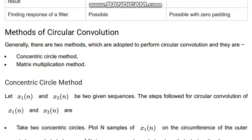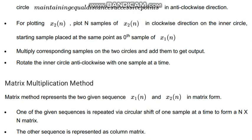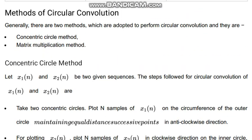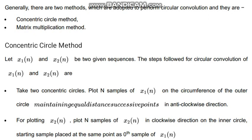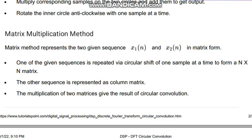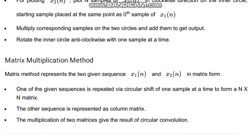So that is methods of circular convolution. First of all, that is concentric circular method, and second is matrix multiplication method. The two given sequences are x1(n) and x2(n). The steps followed for circular convolution: Just take two concentric circles and plot N number of samples x1(n) to the circumference of the outer circle at equal distance successive points in anti-clockwise direction. Then you go through to the next section.